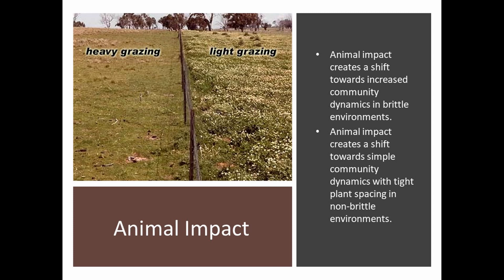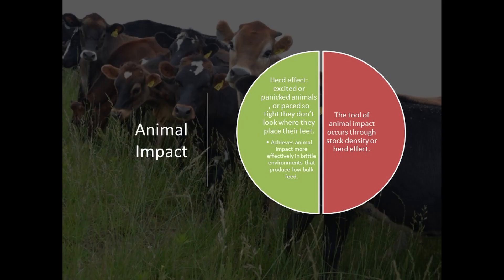Animal impact creates a shift towards increased community dynamics in brittle environments — they need the impact of the animals. Animal impact creates a shift towards simple community dynamics with tight plant spacing in non-brittle environments. The object is to not have any bare ground showing. The tool of animal impact occurs through stock density or herd effect, and this achieves more of an effect on a brittle environment.